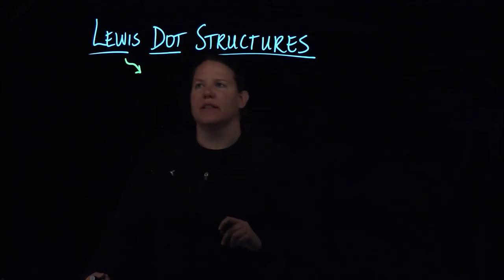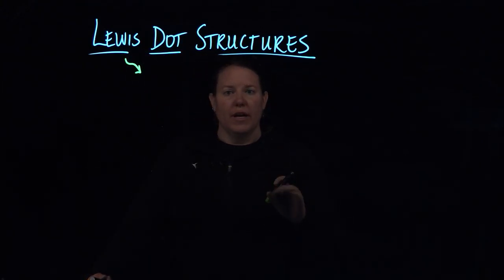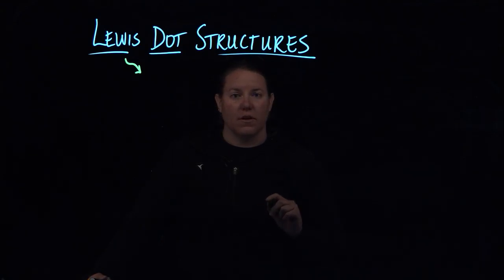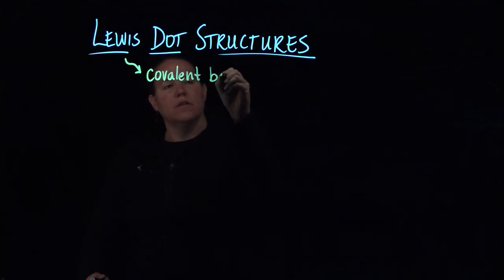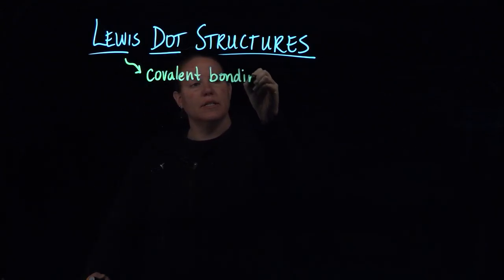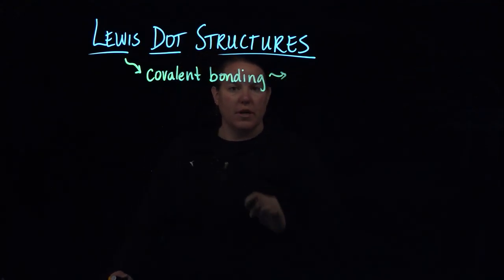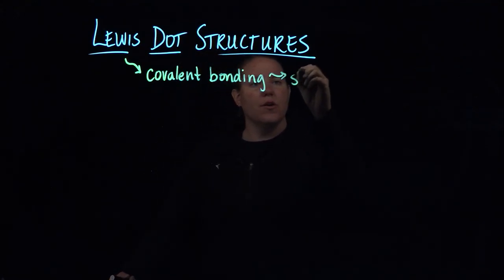So in terms of looking at this, when I say Lewis dot structures are used for covalent bonding, let's take a minute and remember what covalent bonding is, right? Covalent bonding exists between two or more nonmetals and it is the sharing of electrons.